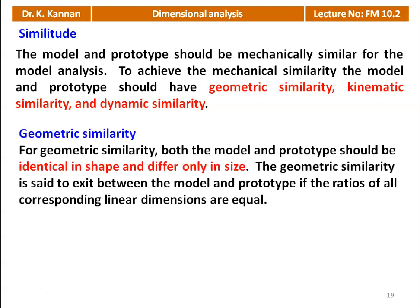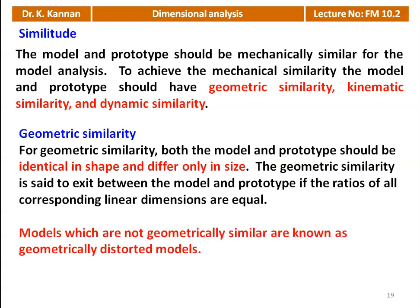For geometric similarity, both model and prototype should be identical in shape and differ only in size. Geometric similarity exists between the model and the prototype if the ratio of all corresponding linear dimensions are equal. Models which are not geometrically similar are known as geometrically distorted models. For example, after designing a dam, we have to conduct a model test — we take a miniature of the dam by reducing its size.